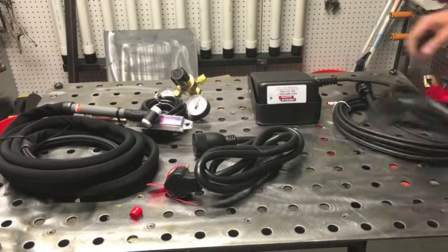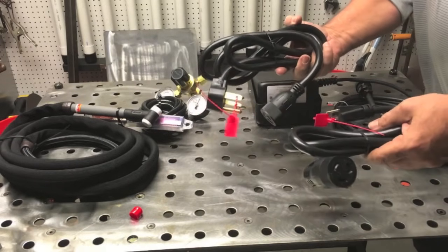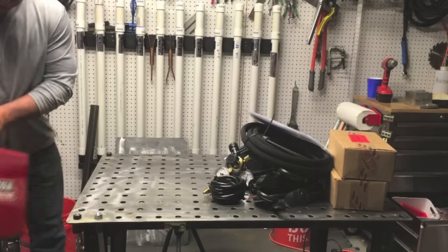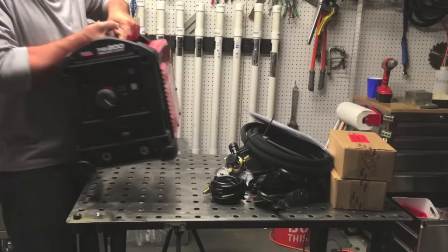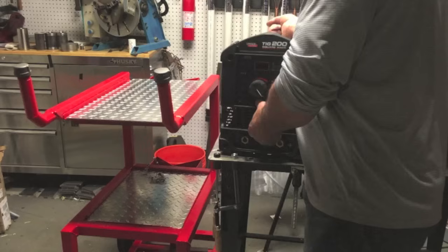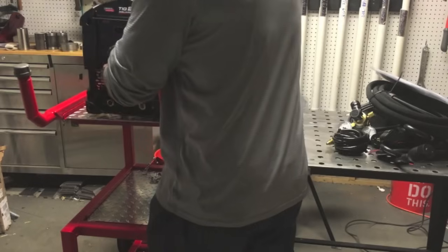Here's a quick look at the stuff that comes in the box. It's a dual voltage machine, so there's two power cables. It weighs about 46 pounds according to Lincoln Electric's website, and I'm going to put it on the welding cart that I recently built.